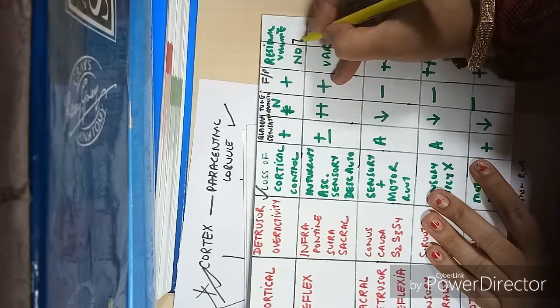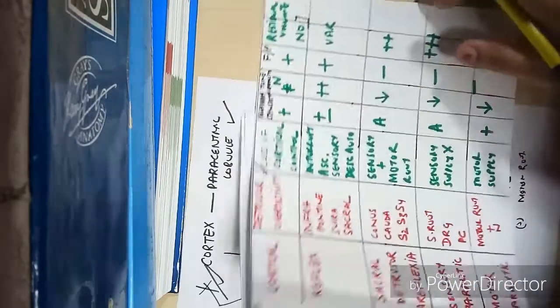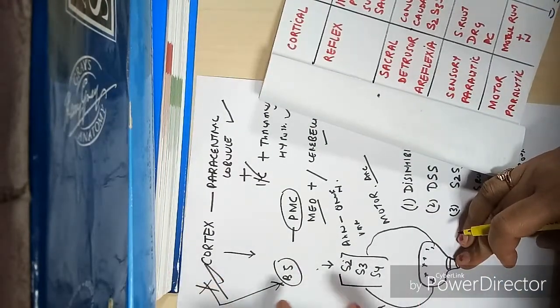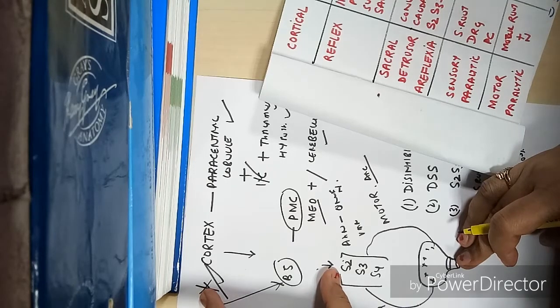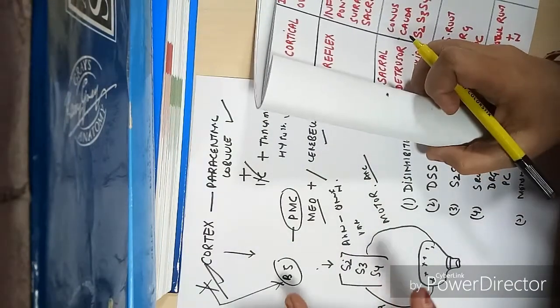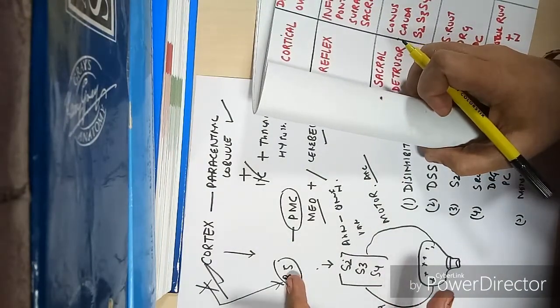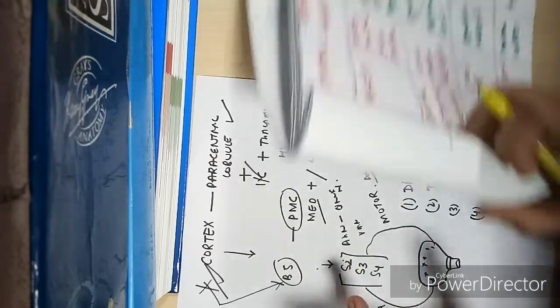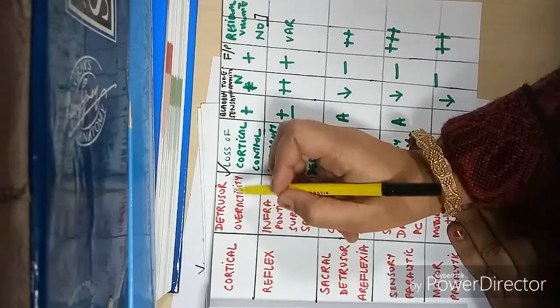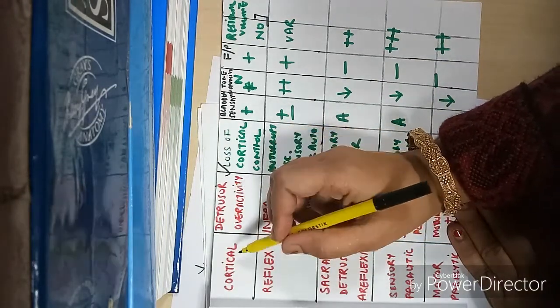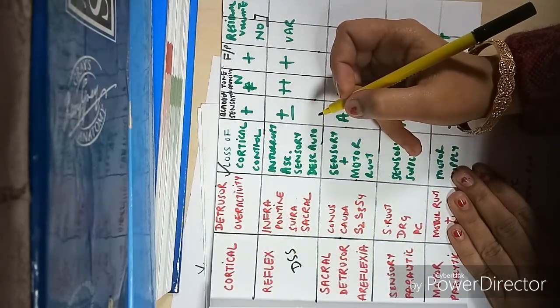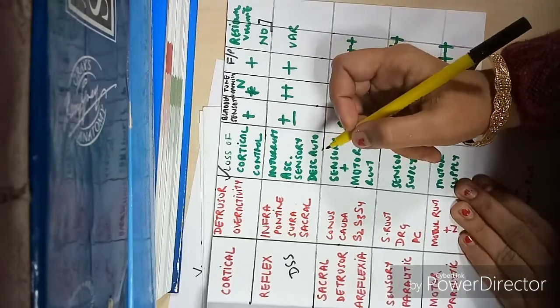The second lesion is between below the brainstem and above S2, which is infrapontine suprasacral. The first was detrusor overactivity, or cortical bladder. The second is also called DSS - detrusor sphincter dyssynergia.